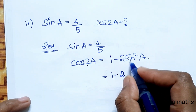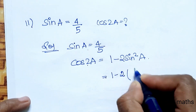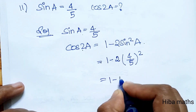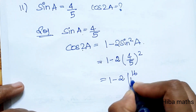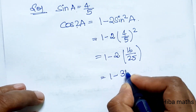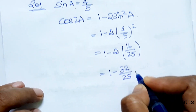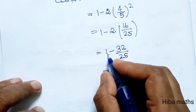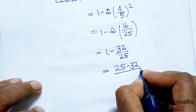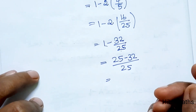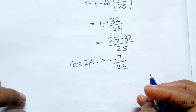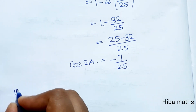cos 2A = 1 − 2 × (4/5)² = 1 − 2 × (16/25) = 1 − 32/25 = (25 − 32)/25 = −7/25. So cos 2A is equal to minus 7 by 25.